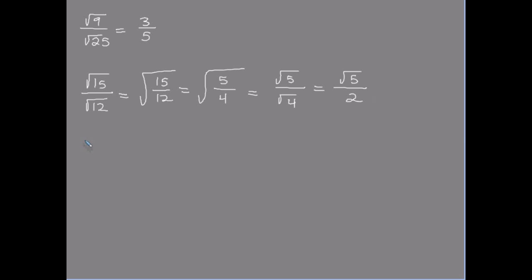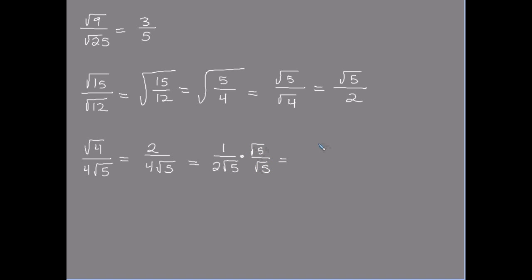Here's another type. If I have the square root of four over four times the square root of five, I can't reduce it yet. Once I simplify the four — that becomes a two — now I can reduce, and I get one over two times the square root of five, because these both divide by two. Now I need to get rid of this square root of five. That gives me the square root of five over two times five, because the square root of five times the square root of five gives me five. So I get the square root of five over ten. This cannot reduce because this five is under the radical and this ten is not.